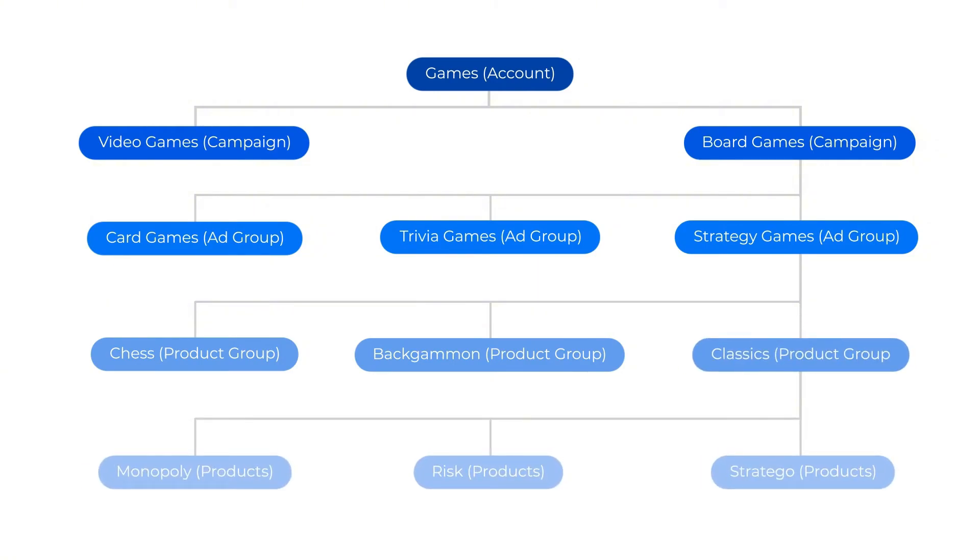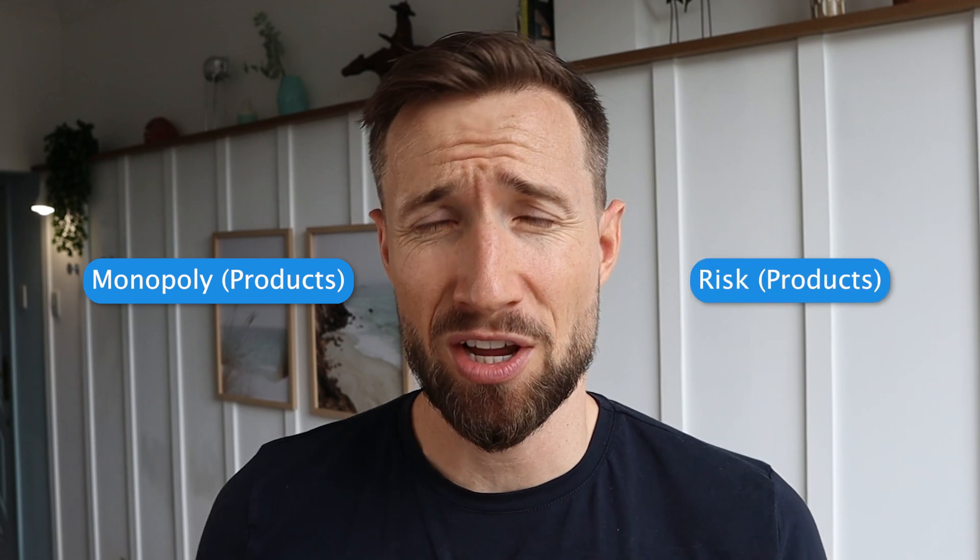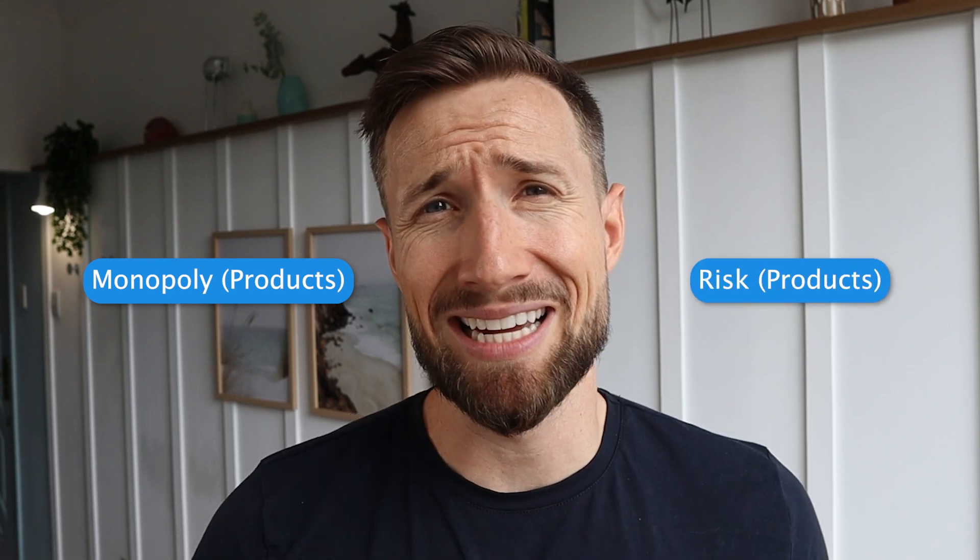Setting up a structure like this lets you more easily set finer goals. You can also quickly see performance patterns as they relate to stock. For example, if you happen to make less margin on Monopoly than Risk, you can bid less on Monopoly. Or what if a certain product group sees a lower conversion rate compared to your other products? You can investigate what issue may be affecting that part of your catalog.